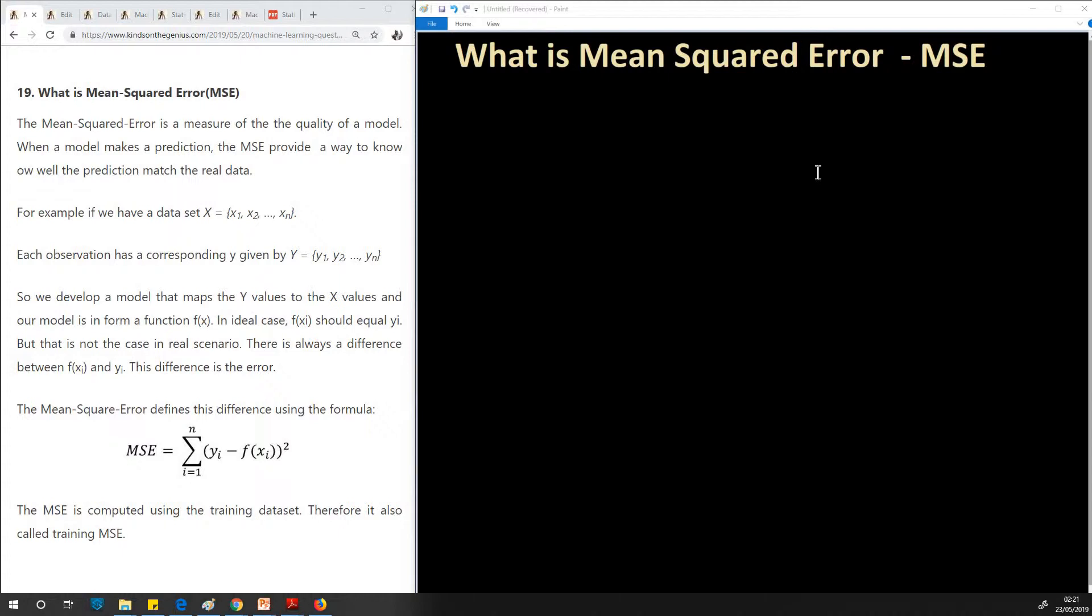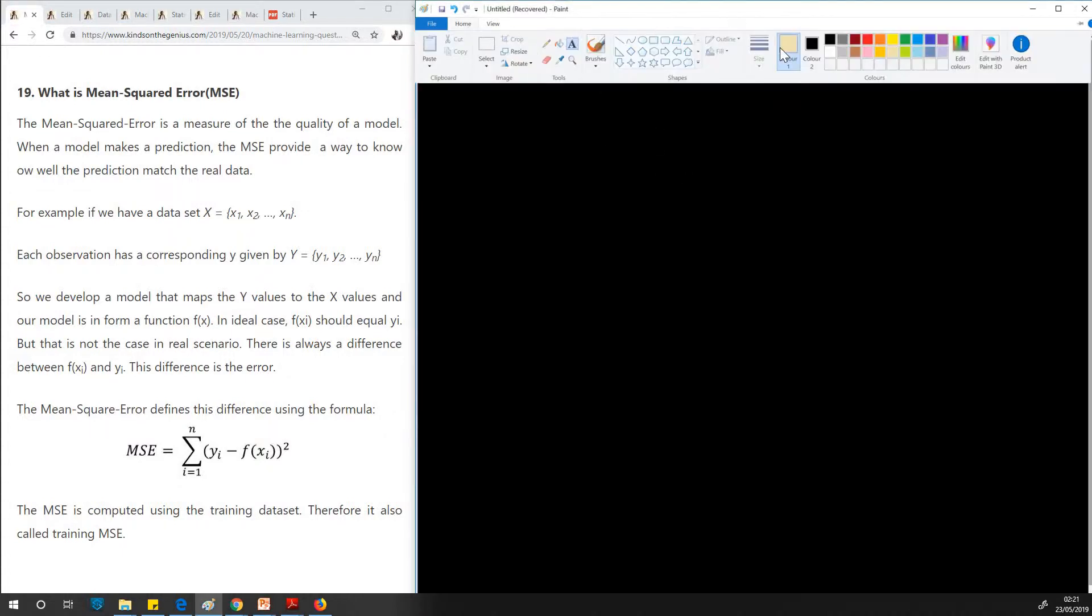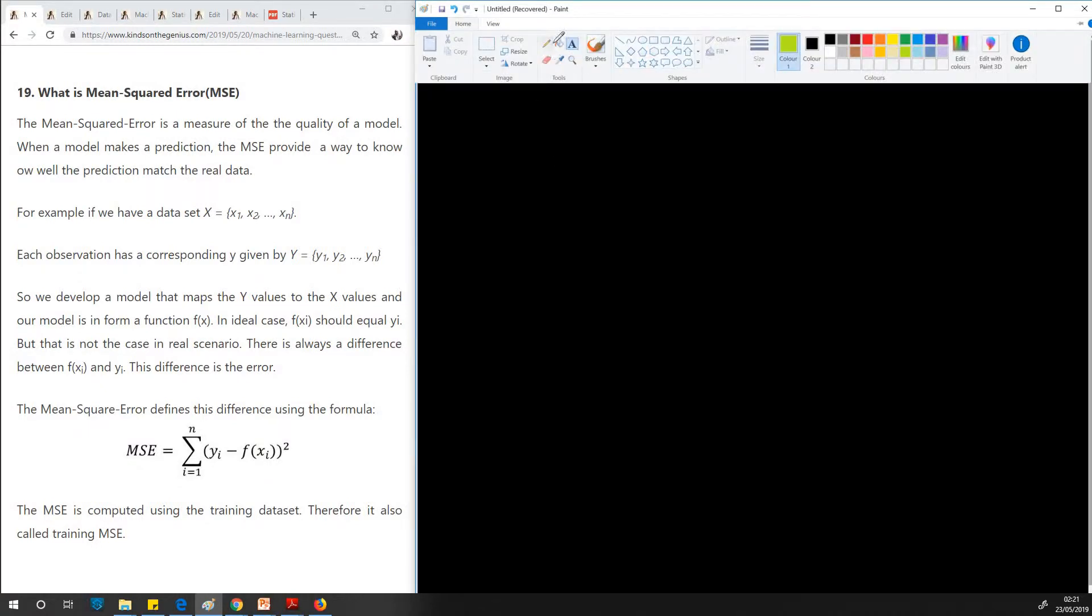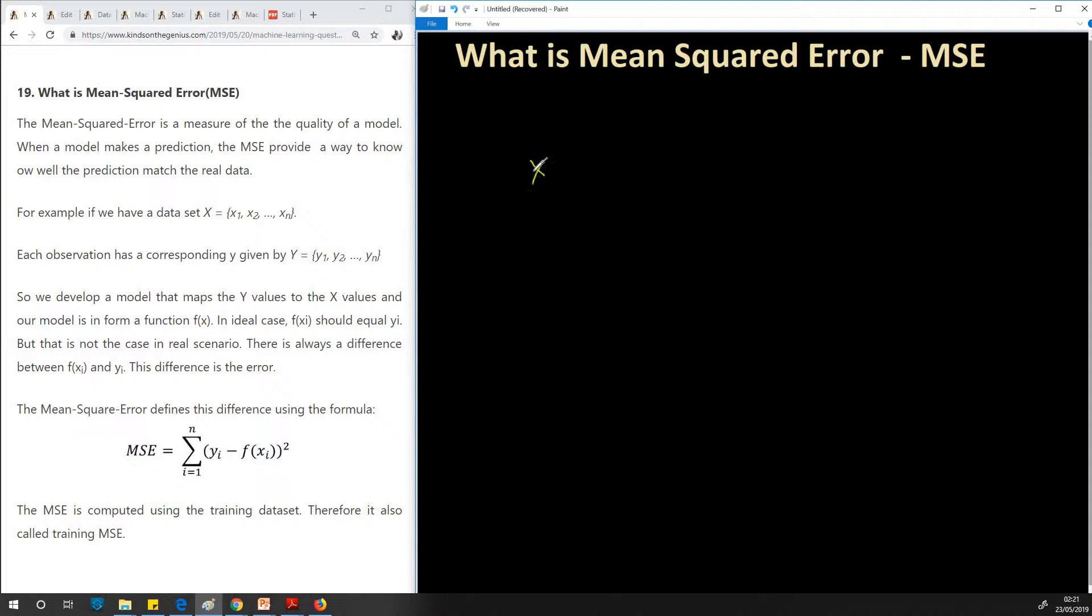For example, if we have a dataset, I'm going to actually write this down. I'll also recommend the best way to learn quickly is to actually be writing. So if we have data X, the set of observations equals x1, x2 all the way to xn. Each observation corresponds to a given y value: y equals y1, y2 all the way to yn.